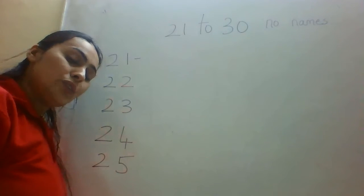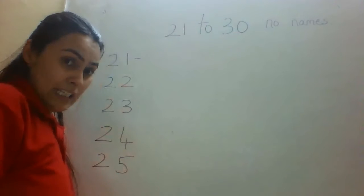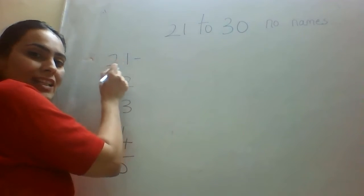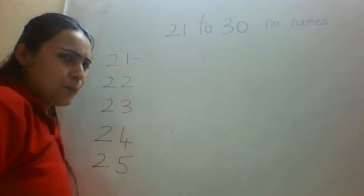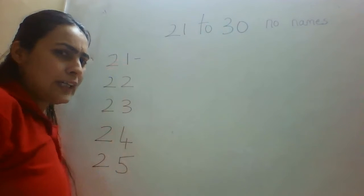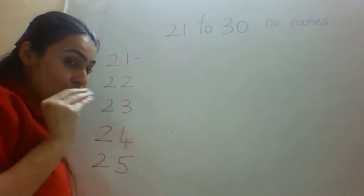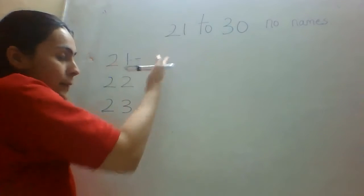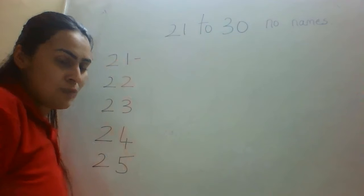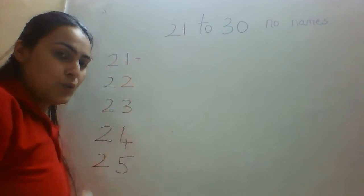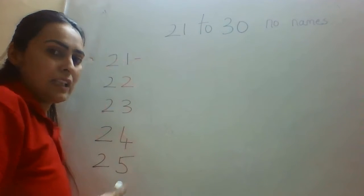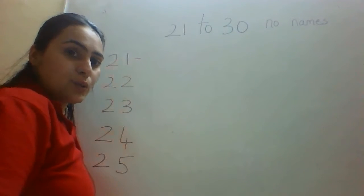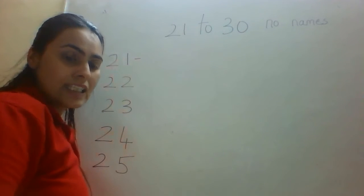Today we are going to write the spellings of these numbers. So this number is 21. Do you know the spellings from 1 to 20? So we all know what is the spelling of 20. If you don't know, please look at the board and listen to me very carefully. We are going to do the number names. So this is 21. What is 21? 21 is twenty-one.